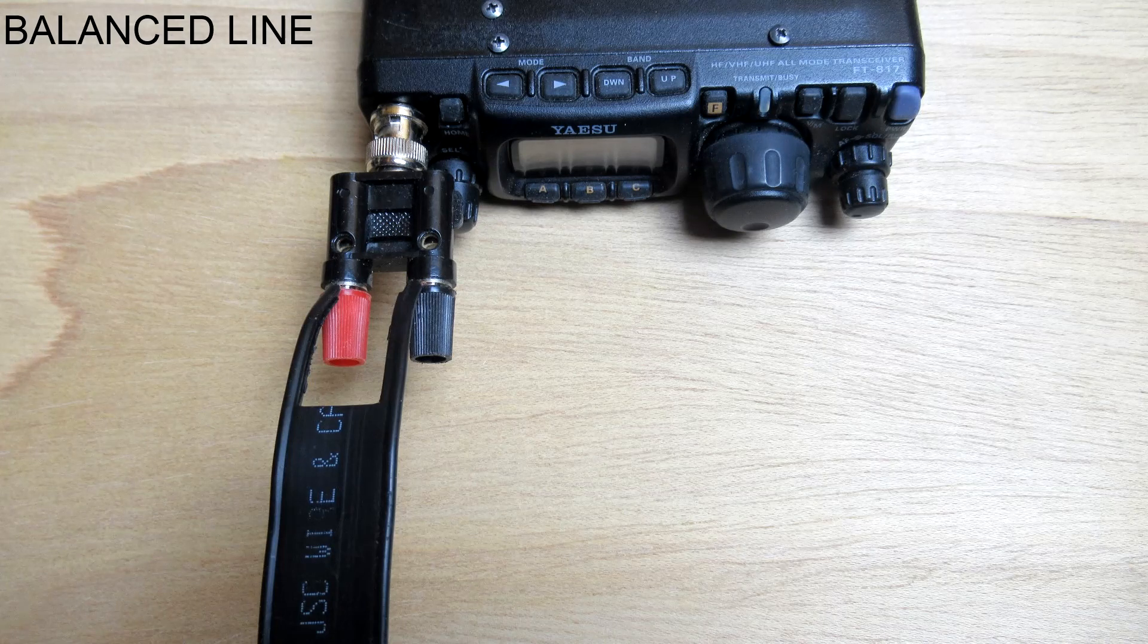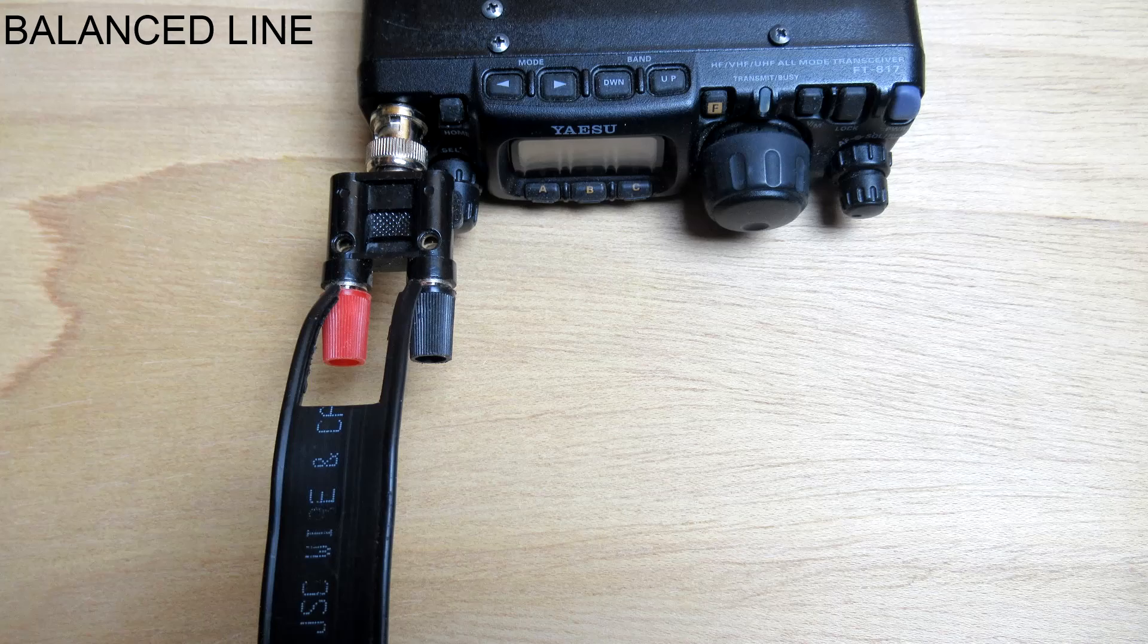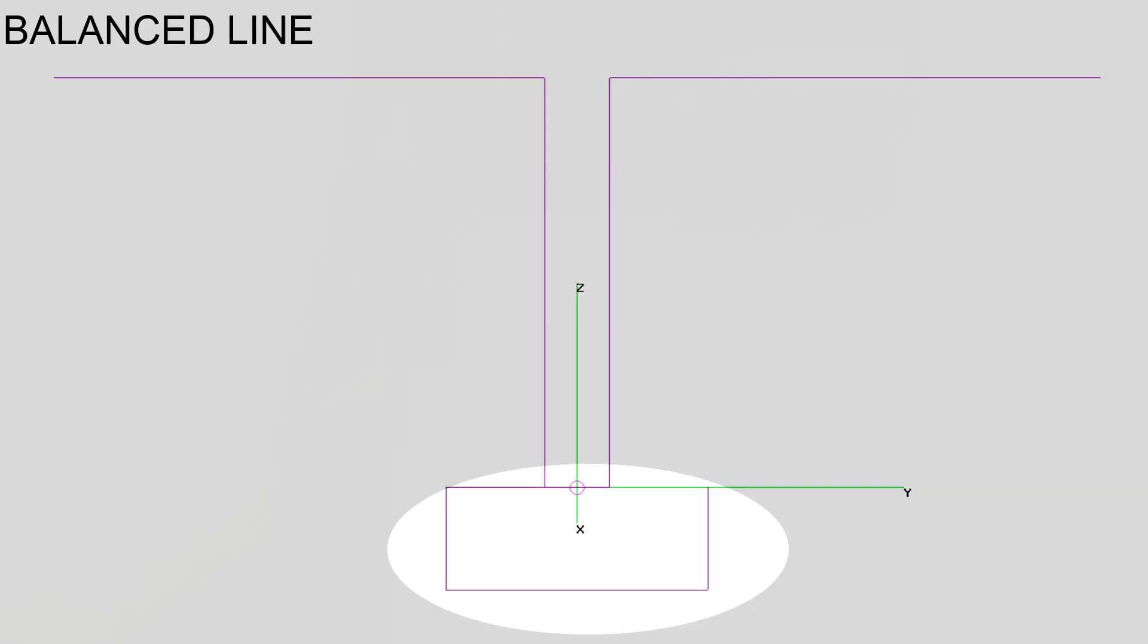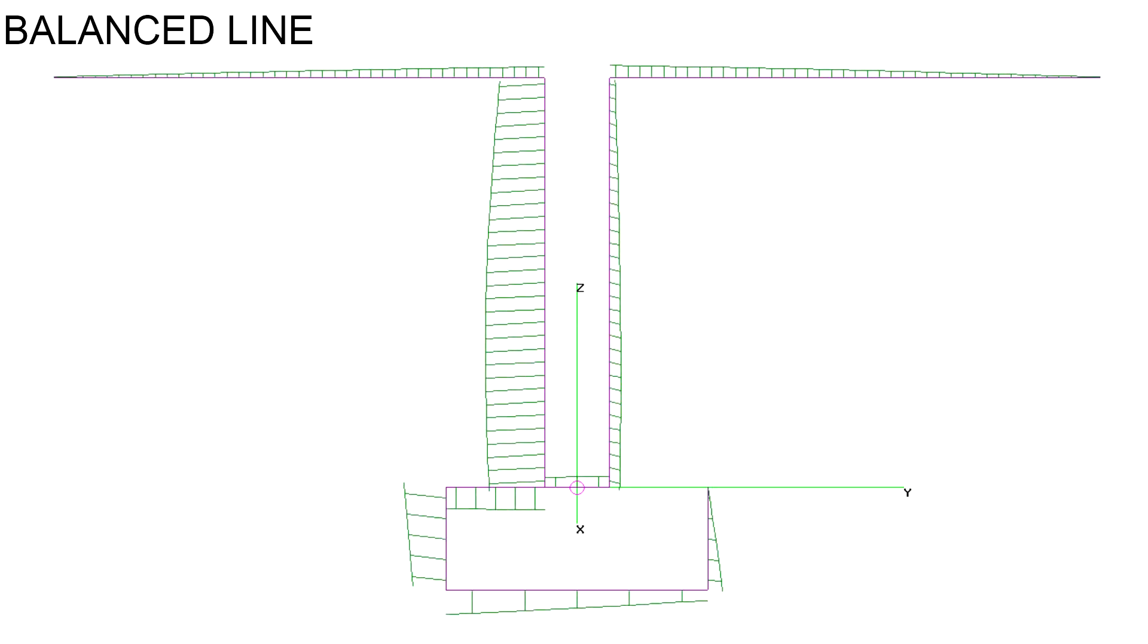In this simulation, we see a balanced line connected directly to the unbalanced output of an RTX. These lines represent the conductor added by the radio box being connected to one side of the generator. Let's see what happens if we calculate the current distribution. As we can see, the current symmetry has been completely disrupted and the balanced line radiates.